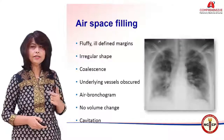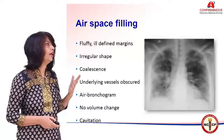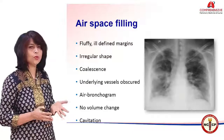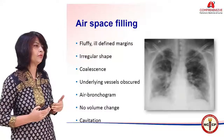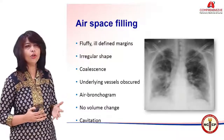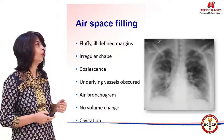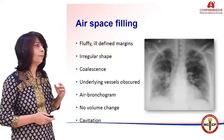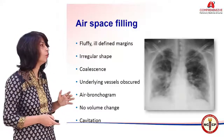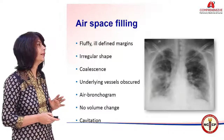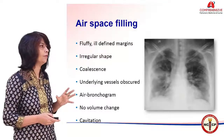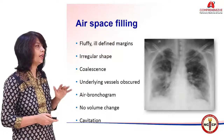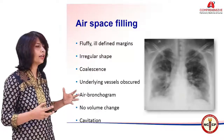An airspace opacity — the term itself is explanatory: the alveolus which was air-filled got replaced with something usually of fluid density, such as blood, exudate, or pure water. On X-ray, all of these look similar: these opacities have ill-defined margins, you cannot make out the borders, they have irregular shapes, and they coalesce.